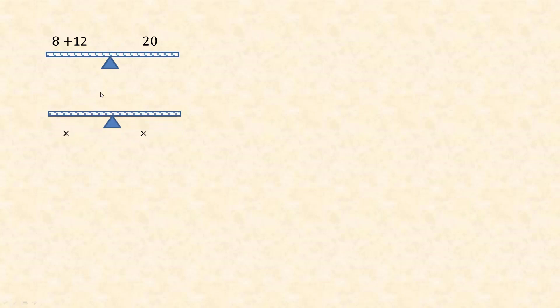Now using a different example: 8 plus 12 on the left and 20 on the right — those are equal because 8 plus 12 adds to 20. Let's say we multiply both sides by 3. This is a common algebra mistake, so pay attention. You have to remember to use BEDMAS whenever you're doing any arithmetic.